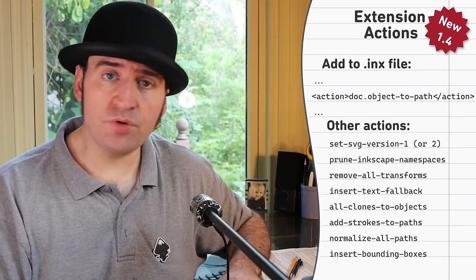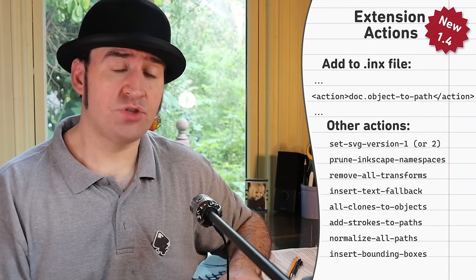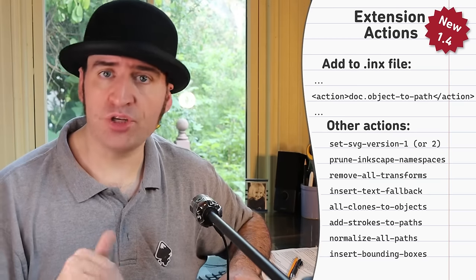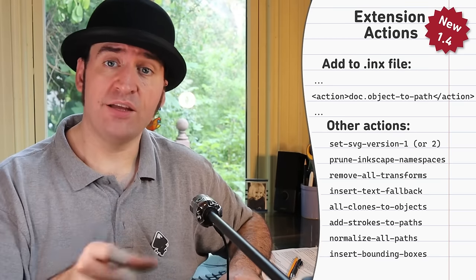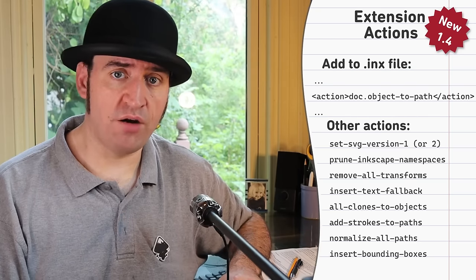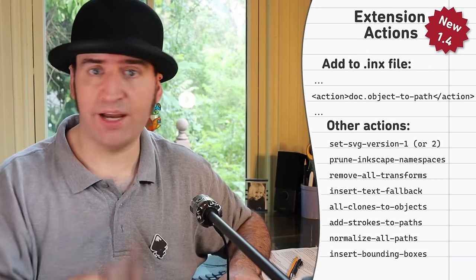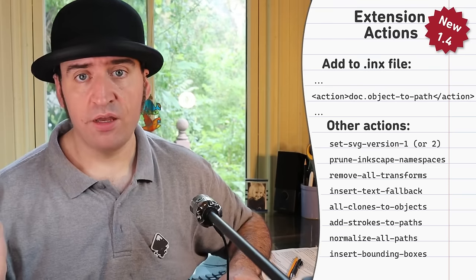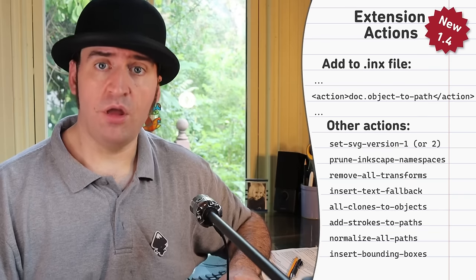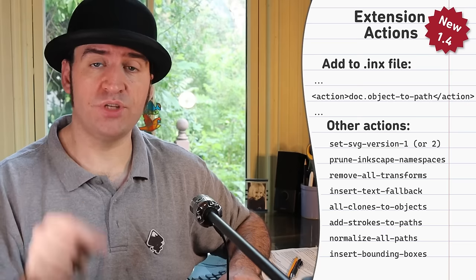But you don't need to do that anymore. All of the pre-processing steps that are available to things like plain SVG and other output types internally in C++ are now available through this new tag that just says 'action', and then you say what it is you want to do. There are a bunch of new actions available, including 'object to path', which will turn all the text, all the objects, all the rectangles — everything that's not a path — into a path. So if you're writing one of these CNC extensions, you should be able to support a lot more when it comes to using it through Inkscape.